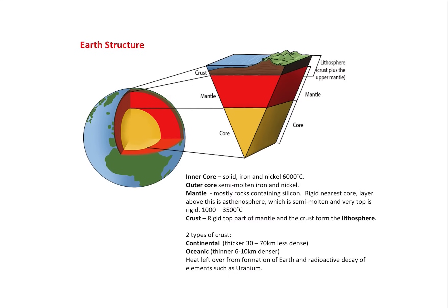And that crust is broken down into continental and oceanic. Continental crust is typically thicker, less dense. Oceanic is typically thinner and denser. Heat left over from the formation of the Earth and radioactive decay of elements, such as uranium, is contained and found here.